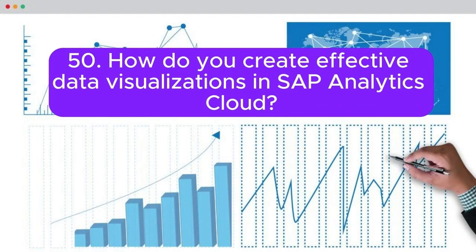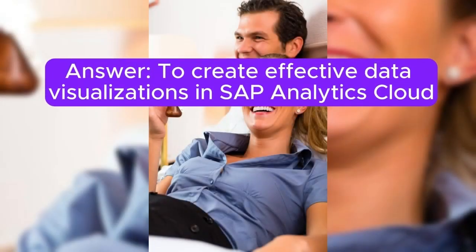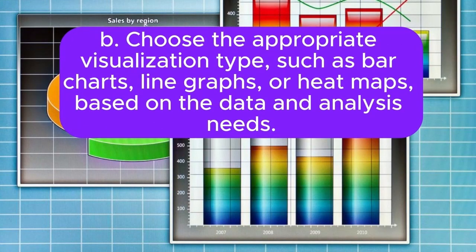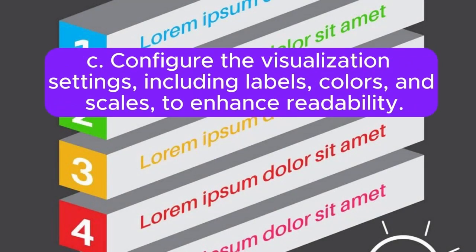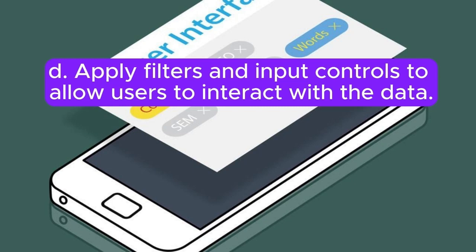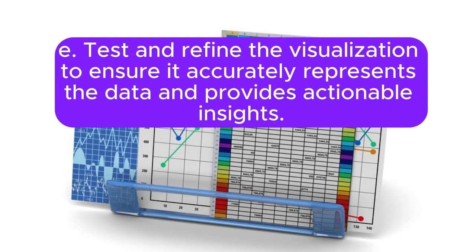Question 50: How do you create effective data visualizations in SAP Analytics Cloud? Answer: To create effective data visualizations in SAP Analytics Cloud: A. Identify the key metrics and dimensions you want to visualize. B. Choose the appropriate visualization type, such as bar charts, line graphs, or heat maps, based on the data and analysis needs. C. Configure the visualization settings including labels, colors, and scales to enhance readability. D. Apply filters and input controls to allow users to interact with the data. E. Test and refine the visualization to ensure it accurately represents the data and provides actionable insights.